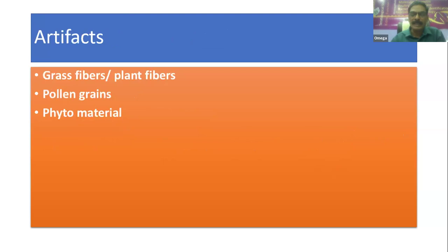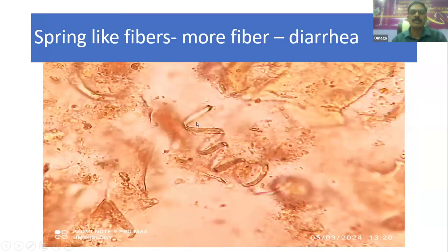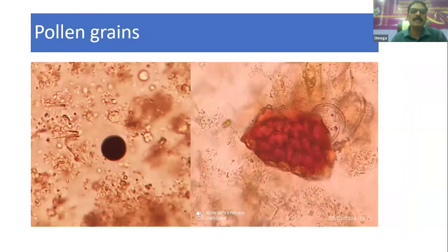Artifacts may also be present in fecal matter — such as grass fibers, plant fibers, pollen grains, and phytomaterials. These are not parasites and one should not be confused by them. However, if fibers are present in large concentration, they may lead to diarrhea in some cases. Phytomaterials have a characteristic appearance, and if large numbers of pollen grains are present, there are chances of allergic-type reactions causing diarrhea.